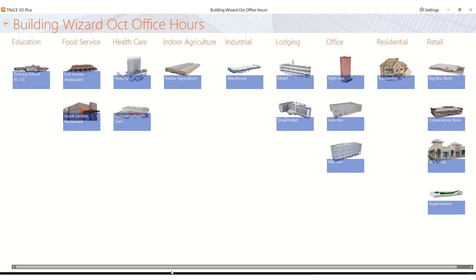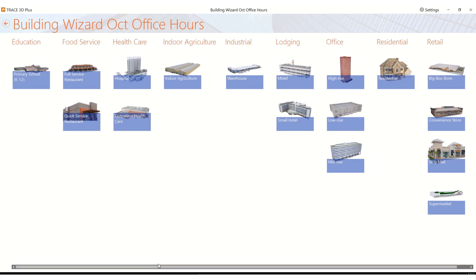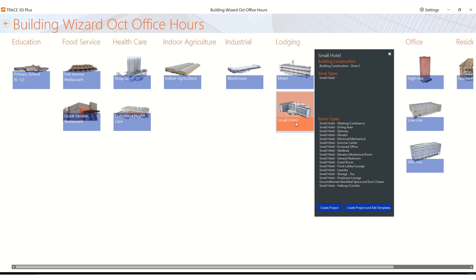You can see that we have various building themes, and what these themes contain is a grouping of templates. Looking at the lodging — small hotel — I have meeting or conference room, dining, guest room: typical things that you would expect from a hotel or any lodging.